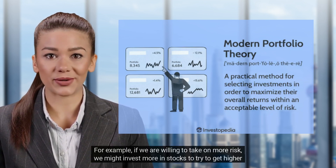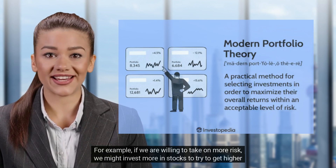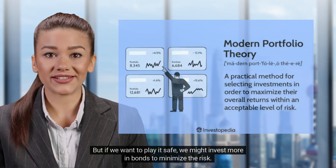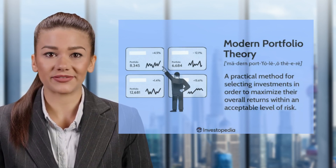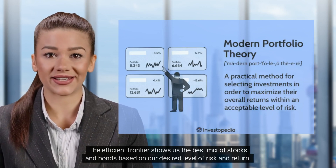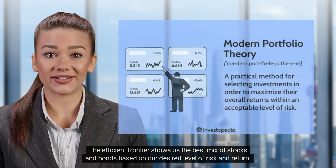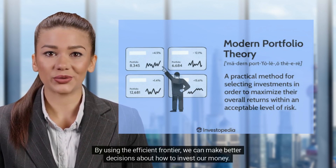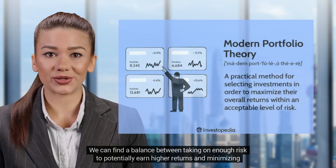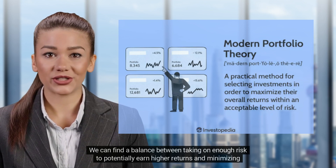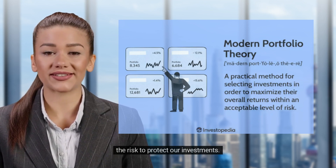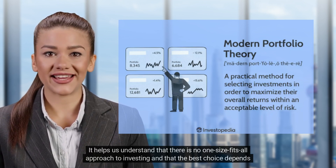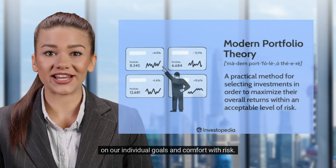For example, if we are willing to take on more risk, we might invest more in stocks to try to get higher returns. But if we want to play it safe, we might invest more in bonds to minimize the risk. The efficient frontier shows us the best mix of stocks and bonds based on our desired level of risk and return. By using the efficient frontier, we can find a balance between taking on enough risk to potentially earn higher returns and minimizing the risk to protect our investments. It helps us understand that there is no one-size-fits-all approach to investing, and that the best choice depends on our individual goals and comfort with risk.